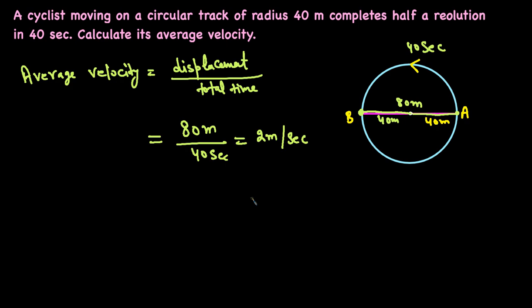Don't get confused with finding the circumference — that would be needed when calculating average speed. Since we're finding average velocity, we look at displacement, which is the straight-line diameter. That was the second example.